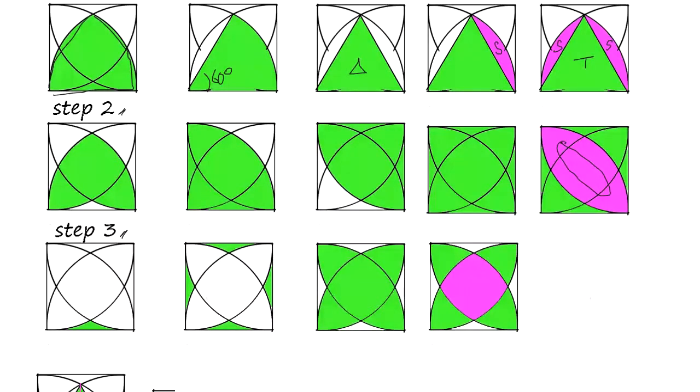This area, if you bend this part into this part, then it's same as this one. So we get this area. From step one to step two, the difference is this area. This is crucial.